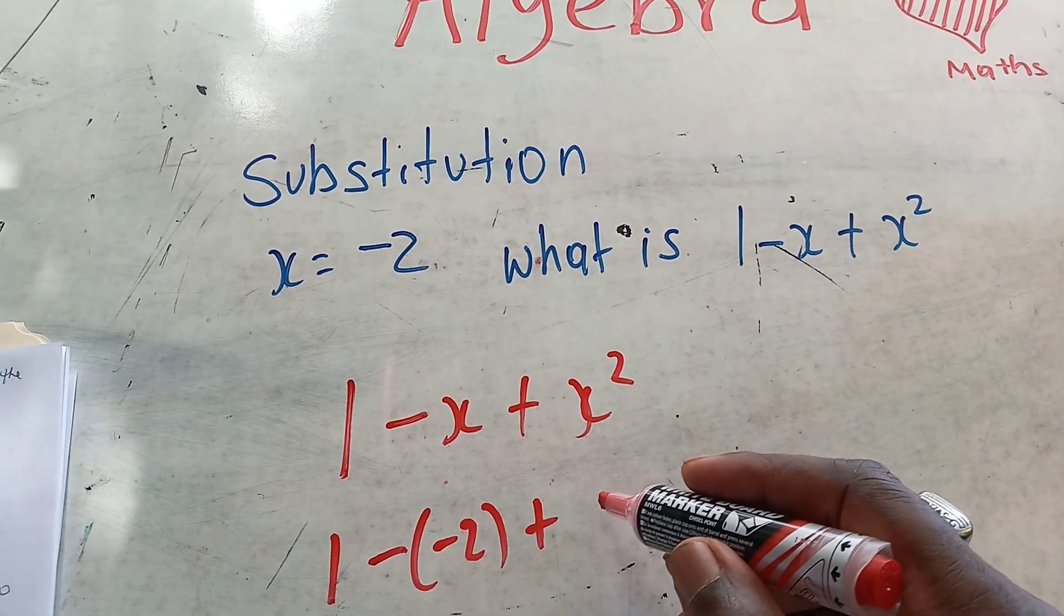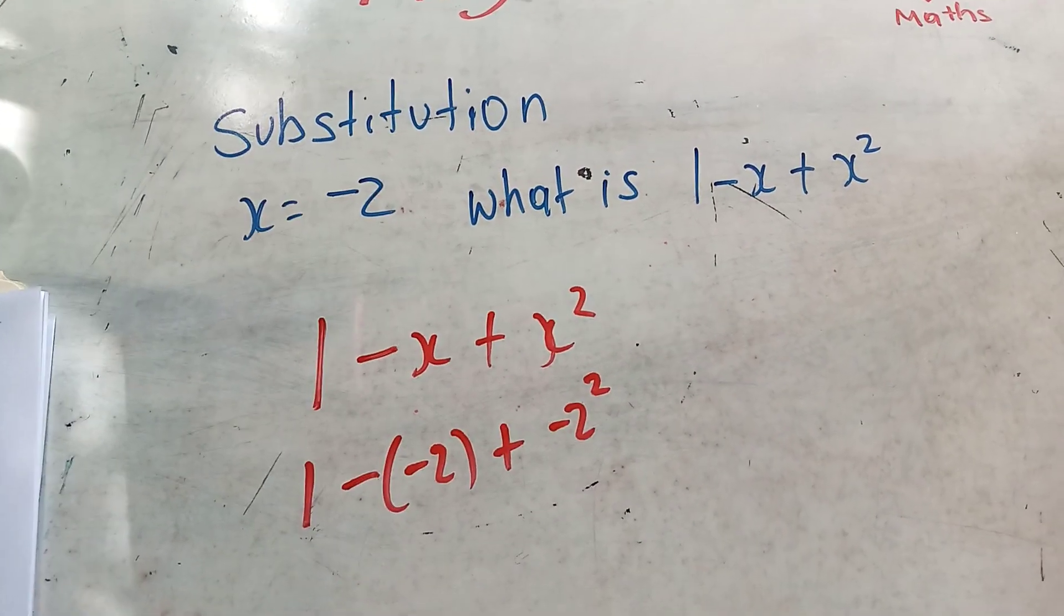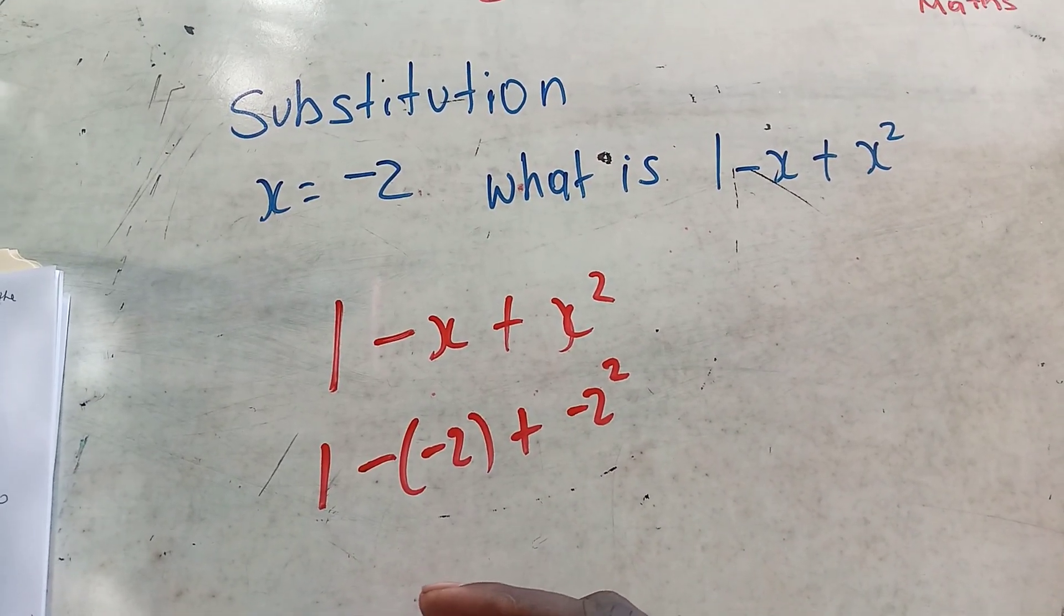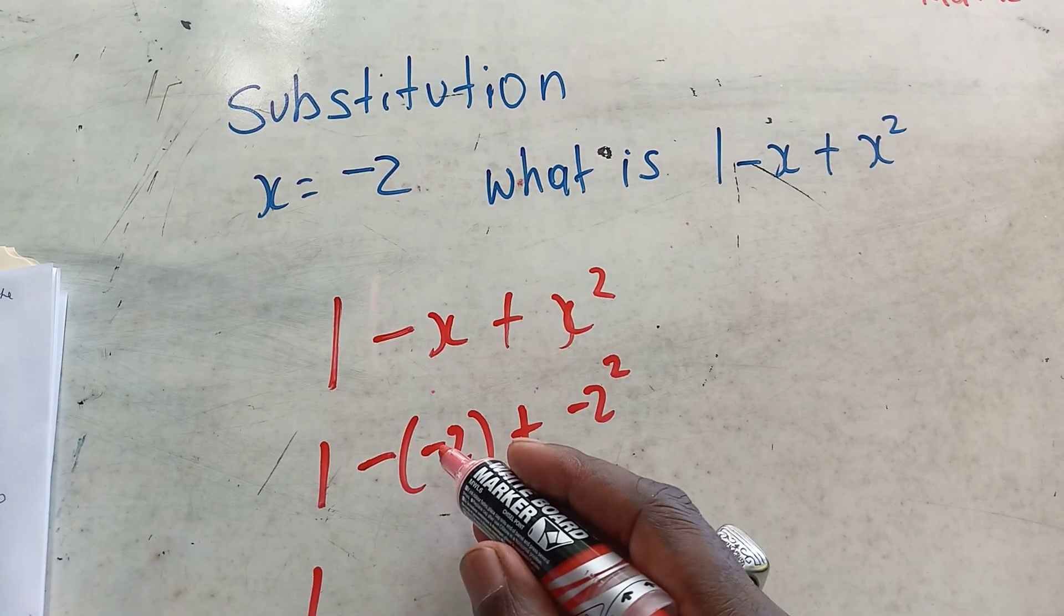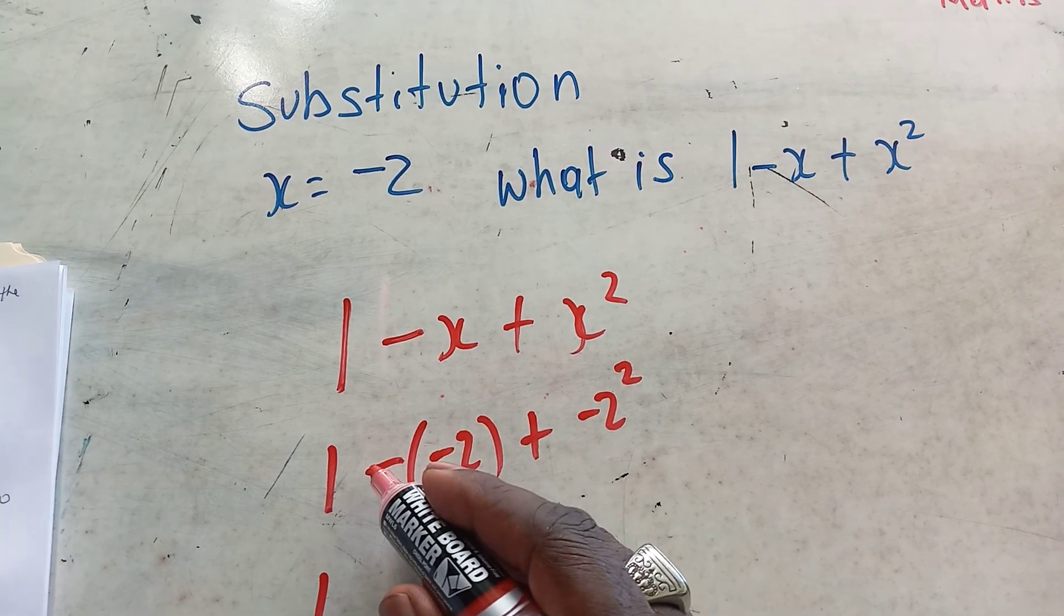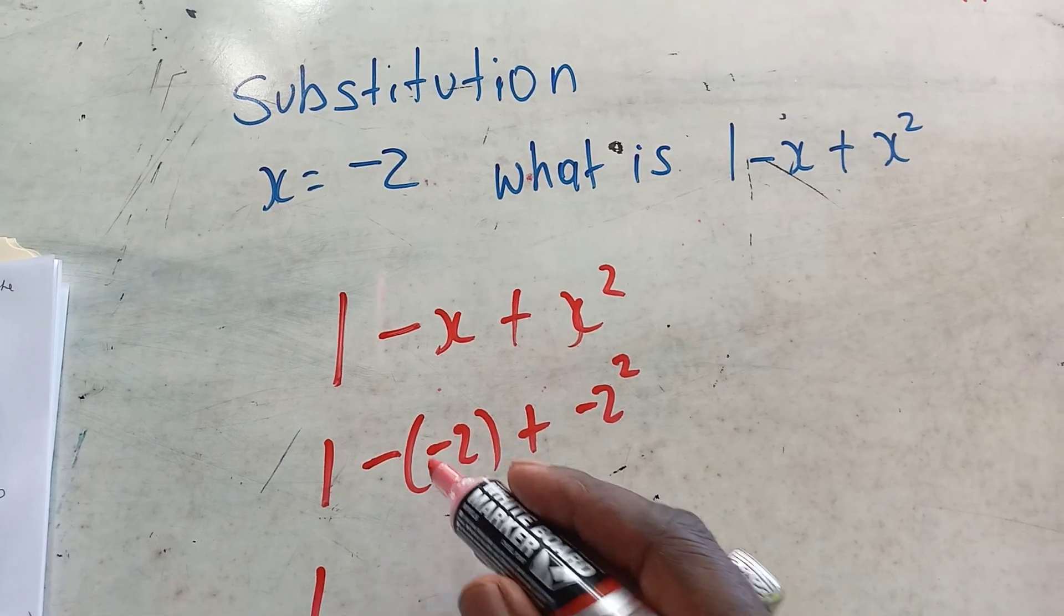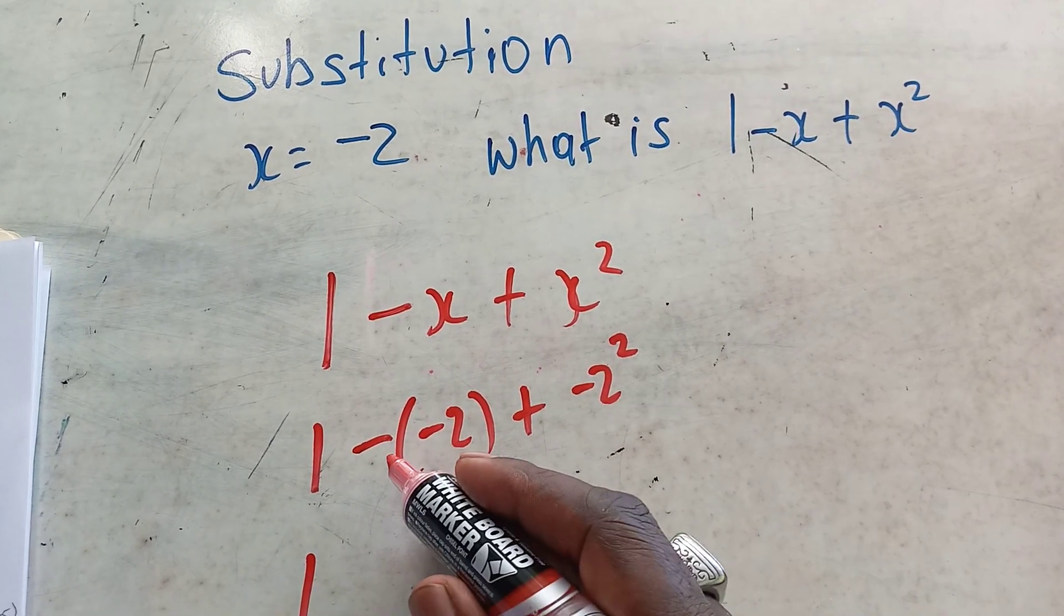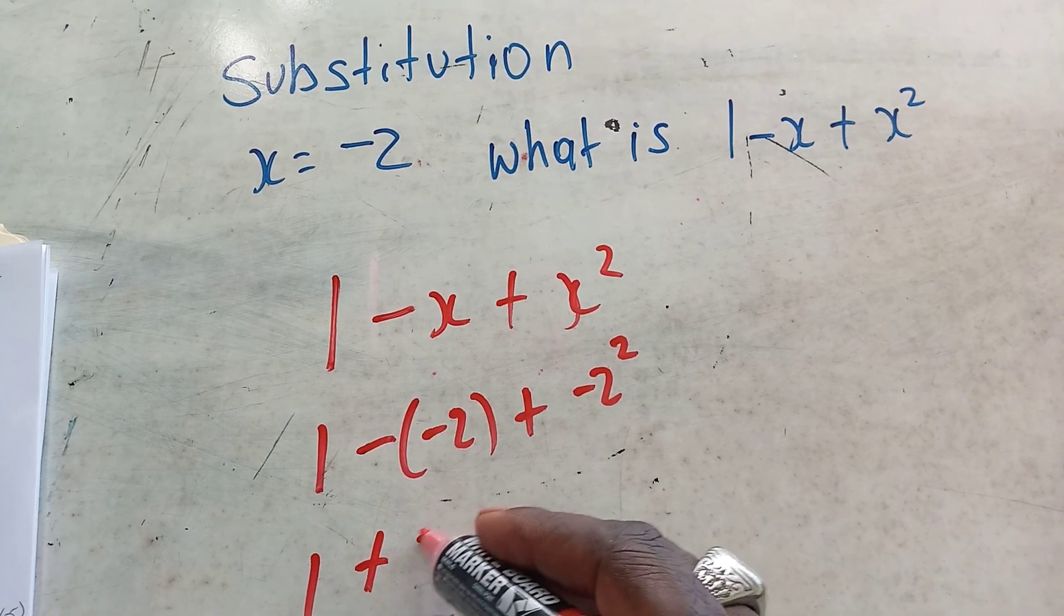All right, good. So we have one negative and negative is going to give you a positive. If there's a negative here, when you're multiplying negative times negative, you're going to get a positive. Always remember that negative times negative gives you positive, so it's going to be a plus 2.